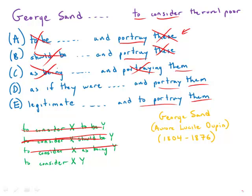I don't need any preposition or anything else. I can immediately follow the noun with the description. So 'she considered the rural poor legitimate subjects' — that's perfectly correct.